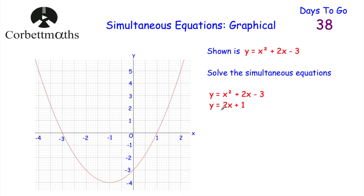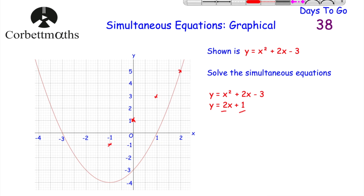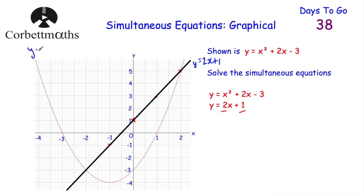The quadratic has been drawn for us, so we just need to draw the linear graph y equals 2x plus 1. Using y equals mx plus c: the gradient is 2 and the y-intercept is 1. We plot the y-intercept at 1, then go across one unit and up 2 for each point, and likewise back 1 and down 2. Using a ruler and pencil, we draw a nice straight line through those points.